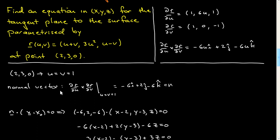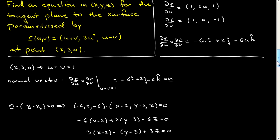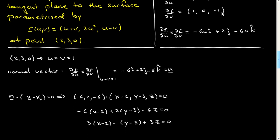What we need is a normal vector to the surface, so that's just the cross product which we've already computed, evaluated at u equal v equal 1. You do that and you get this vector — notice this is not of unit length. For finding an equation in three variables x, y, z, this vector doesn't have to be of unit length; it simply has to be normal to the surface. I don't need to normalize this vector.